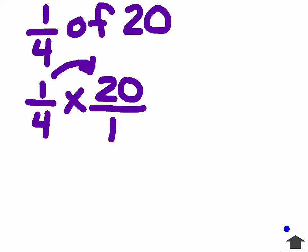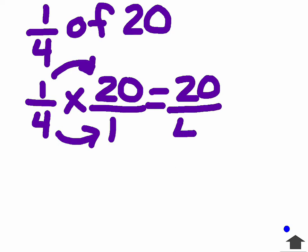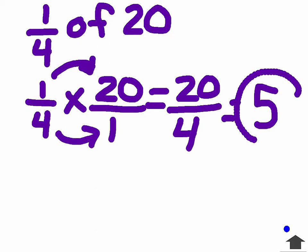If I take one times twenty, I'm going to get twenty. If I take four times one, I'm going to get four. This is an improper fraction and I know that I need to think how many times can four go into twenty. Four can go into twenty five times and there's nothing left over. So our answer is just going to be the whole number of five.